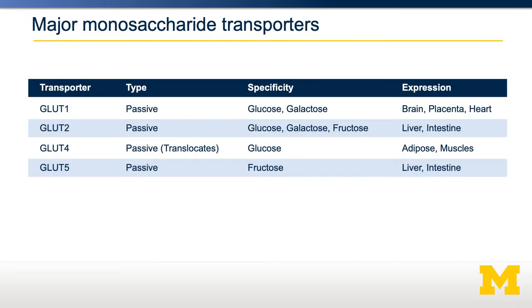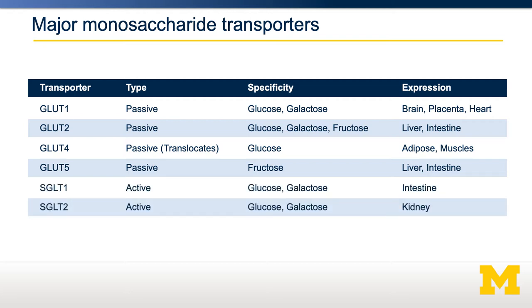In terms of monosaccharide transporters, there are six major transporters that are important: GLUT1, GLUT2, GLUT4, and GLUT5. These are all passive transporters with different specificity and different tissue expressions. And SGLT1 and SGLT2 are sodium-glucose co-transporters that exist either in the intestine or the kidney.